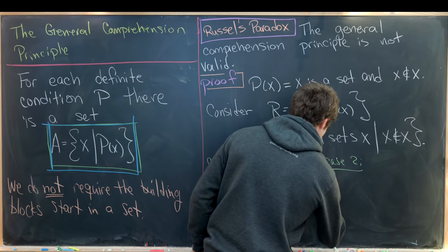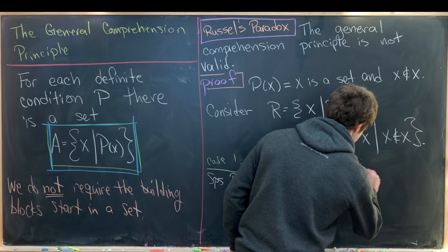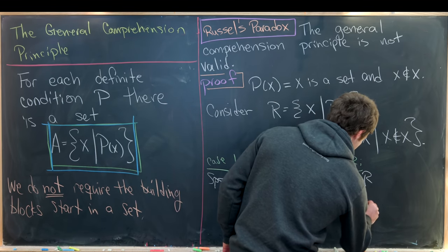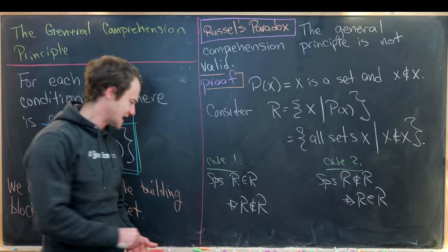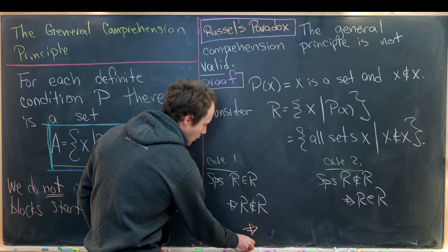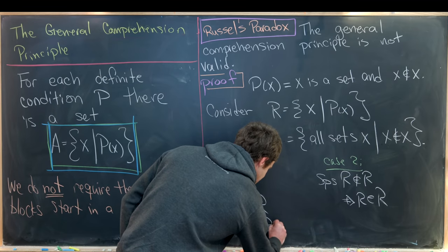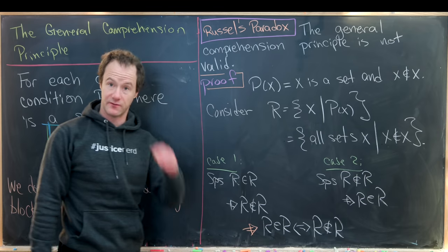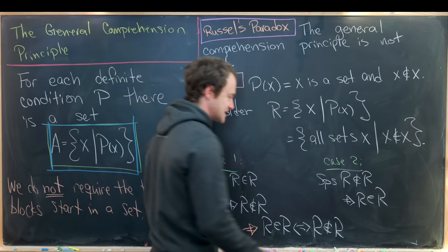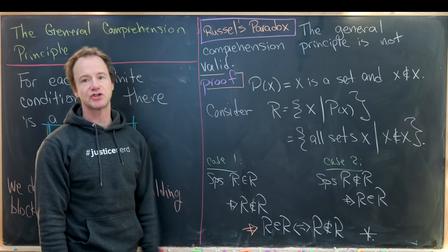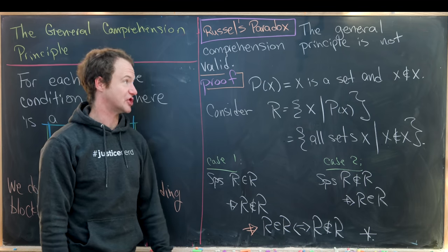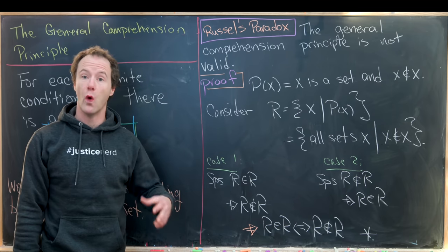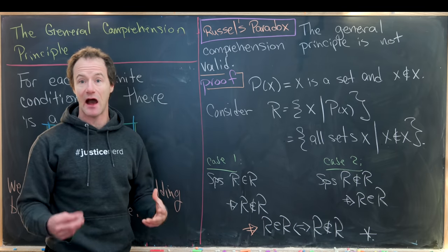So let's move on to the second case, where we suppose that R is not an element from R. But that's exactly the entry fee into being in R. So that implies that R is in R. That means the second case can't be true. And maybe more specifically, what that tells us is that the condition for R being an element from R is equivalent to the condition for R not being an element from R. But this is clearly impossible. So we have reached a contradiction. And I guess what did we contradict? Well, we contradicted the validity of the general comprehension principle, because we started out assuming at the beginning that the general comprehension principle was valid. And we constructed this crazy set out of its validity.